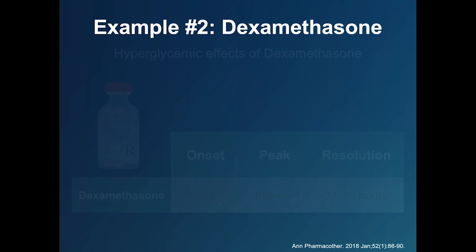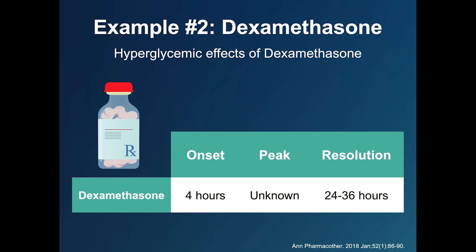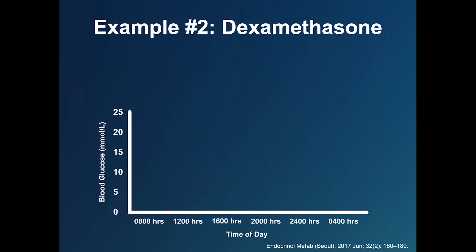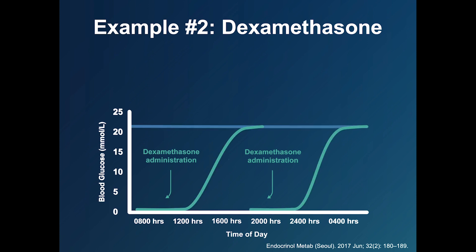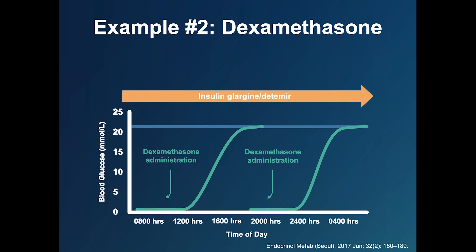Example 2: Dexamethasone. Dexamethasone is a long-acting glucocorticoid. Its hyperglycemic effects begin around 4 hours after administration and can last for 24 to 36 hours. Dexamethasone is often given twice a day — once in the morning and once in the evening — so because of its long duration and twice-daily dosing, blood sugars are high all the time, day and night. Based on clinical experience, long-acting basal insulin preparations such as insulin glargine and detemir are good matches for the prolonged hyperglycemia from dexamethasone.